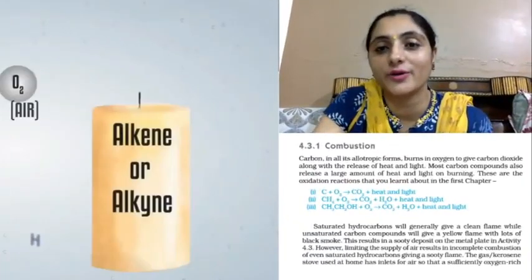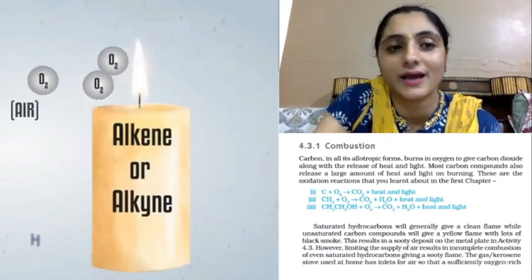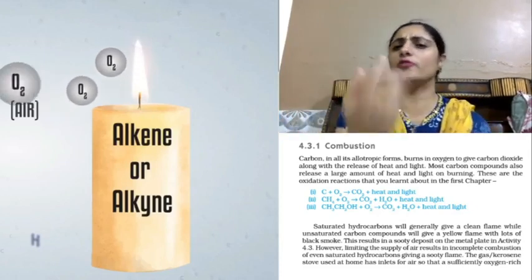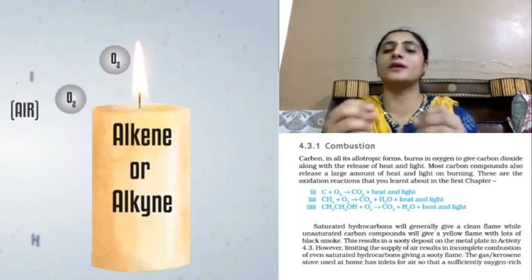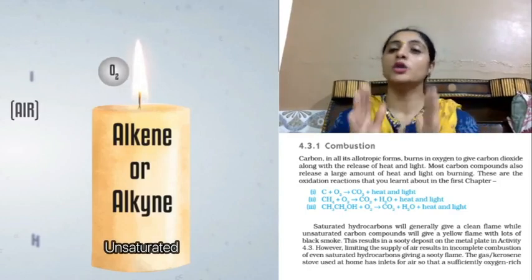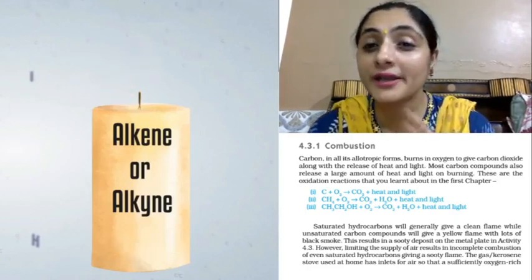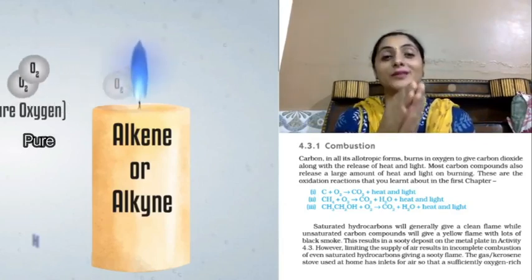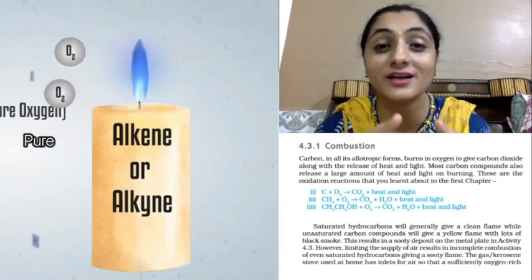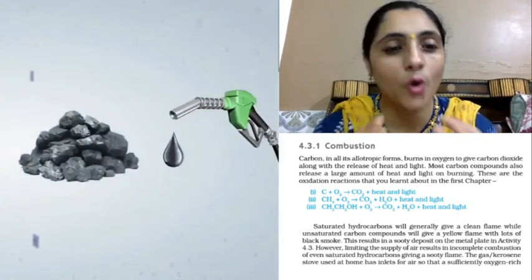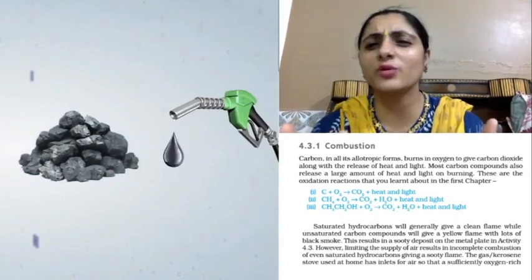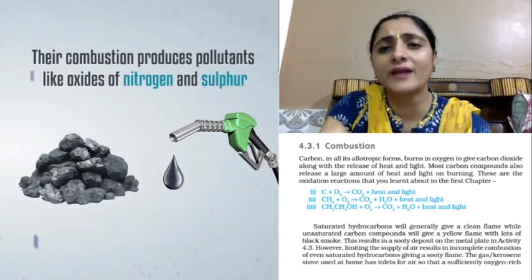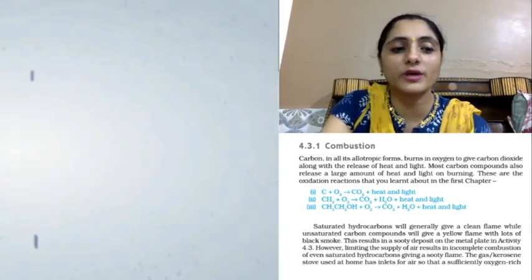For unsaturated hydrocarbons — alkenes and alkynes — they receive oxygen from the air, but they burn with a yellow flame because unsaturated compounds do not undergo complete combustion. However, if we provide them with pure oxygen, they will also burn with a blue flame. The condition is pure oxygen supply. For coal, petroleum, and diesel, incomplete combustion also occurs, producing smoke. Their combustion also involves nitrogen and sulfur compounds that act as pollutants.